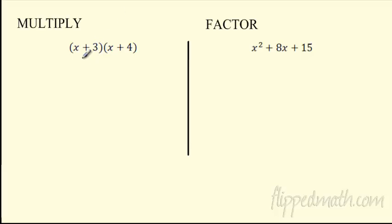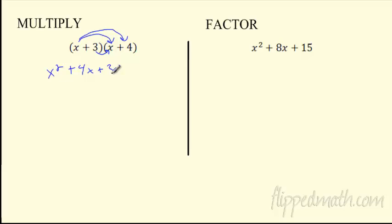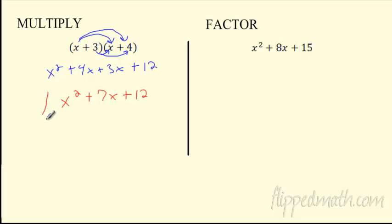This is what we're doing. We used to give you something like (x+3)(x+4) and say go ahead and multiply that out. It's that double distribute idea: x times x is x², x times 4 is 4x, 3 times x is 3x, and 3 times 4 is 12. The middle terms combine: 4x and 3x gives us 7x. We ended up with x²+7x+12 — a second degree trinomial.